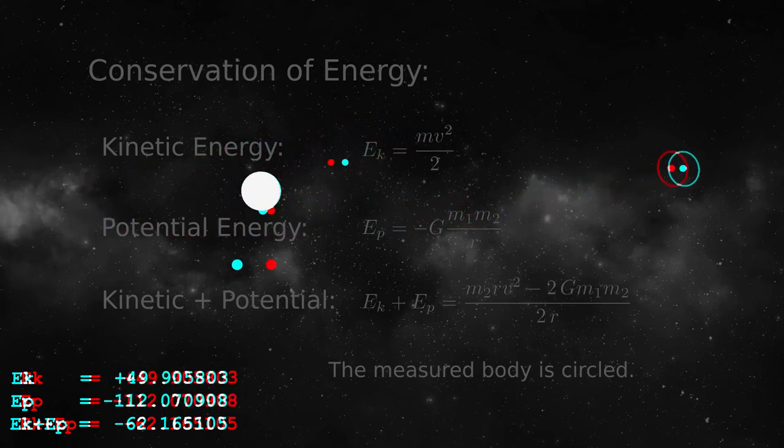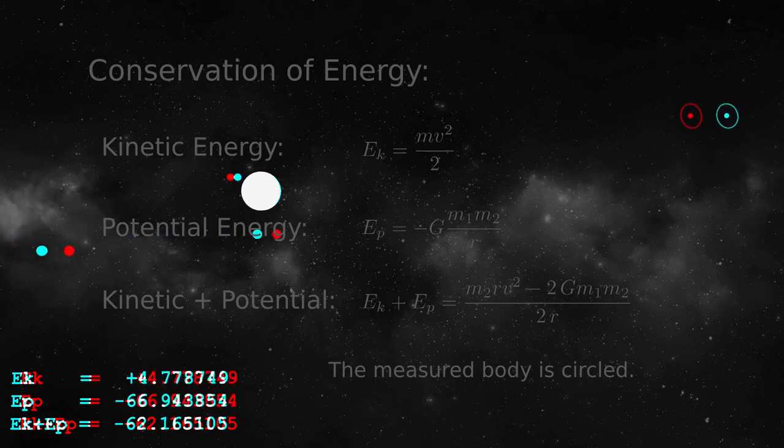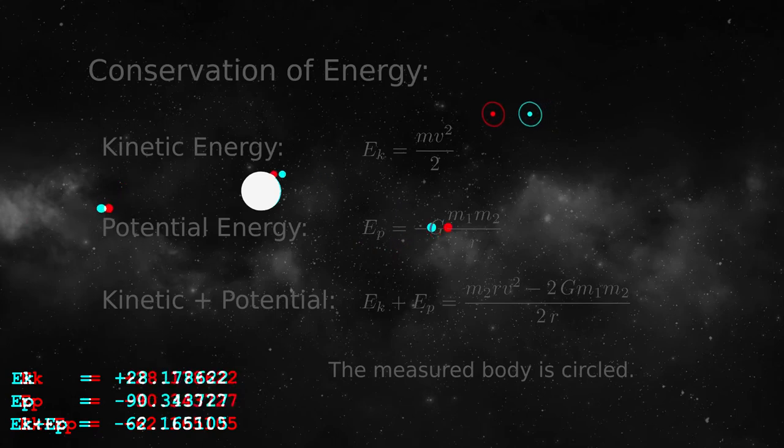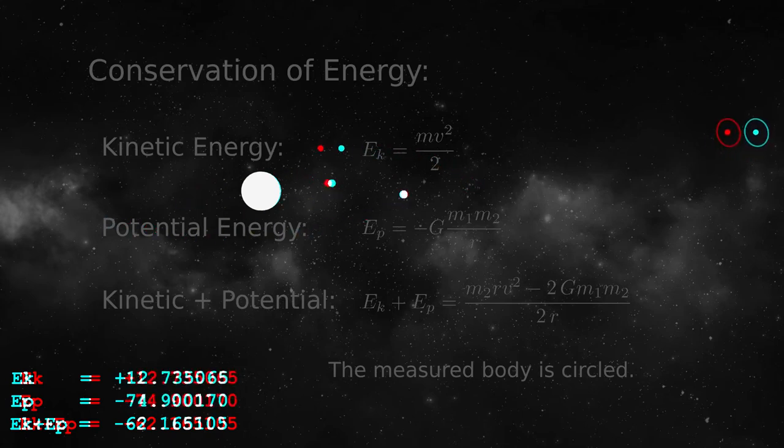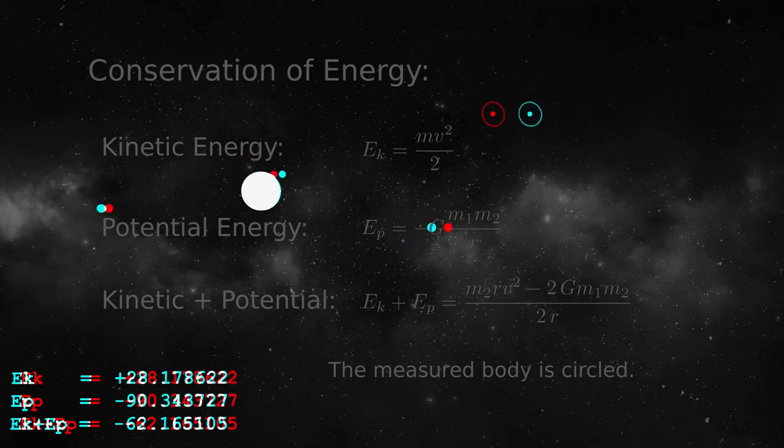Using the Blender graphics program and my own Python code, I set up a model with an extreme elliptical orbit chosen so the relationship between kinetic and potential energy would constantly change as the planet moves. Then at each point in the orbit I recorded the two kinds of energy and added them together.